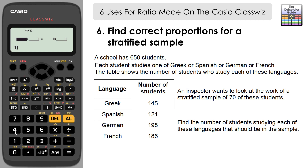For Greek students: 145 out of 650 is the population ratio. We want the same ratio in our sample of 70, so input 145 and 650 on the left, then 70 and x on the right. Press equals and convert to decimal: we get 15.6, meaning we need either 15 or 16 Greek students in our sample.